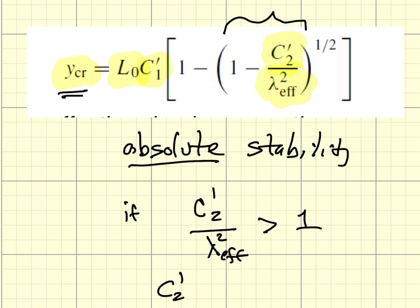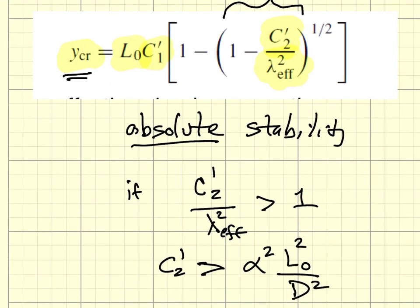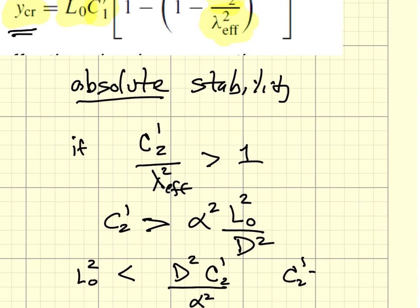Let's manipulate this. C2-prime has to be greater than the effective slenderness ratio squared. I put the square term in there, L0 squared, capital D squared. I'm going to substitute for this C2 constant and rearrange. L0 squared has to be less than D squared times C2-prime divided by alpha squared. C2-prime is 2π² times E minus G over 2G plus E.